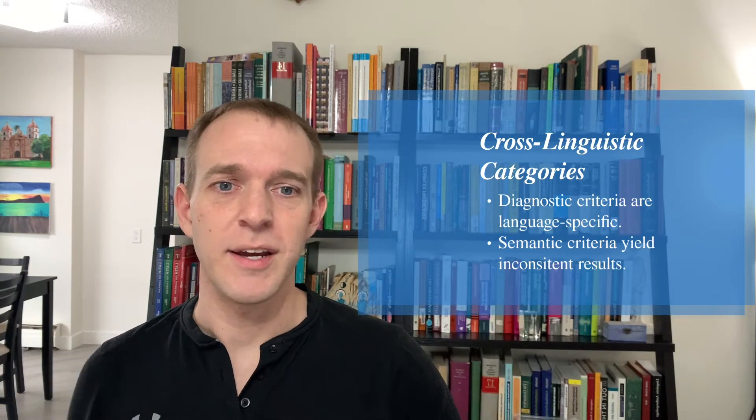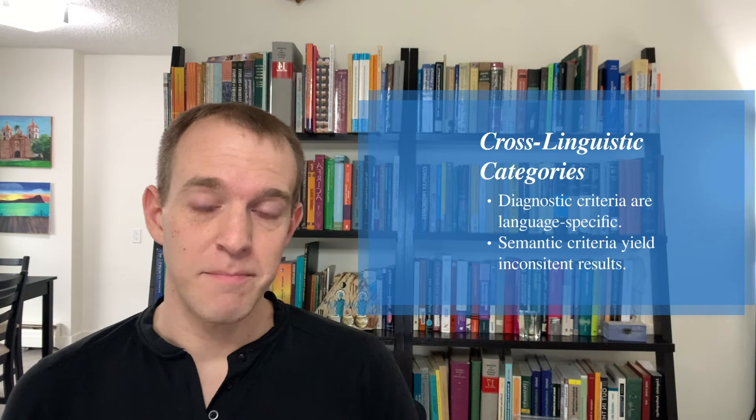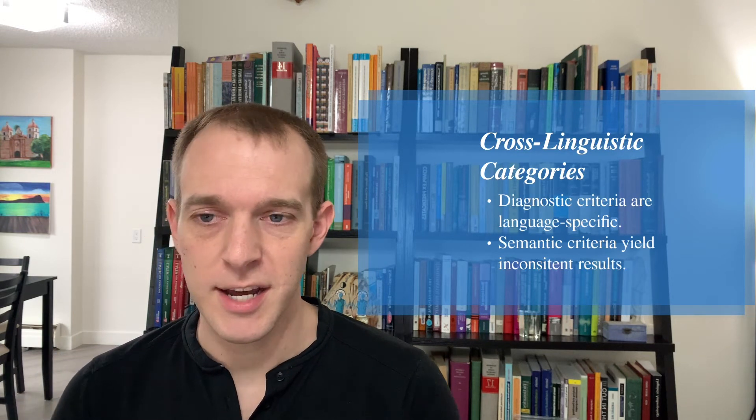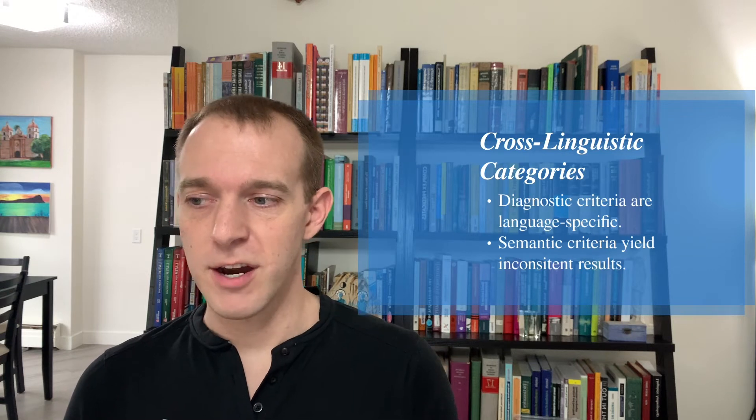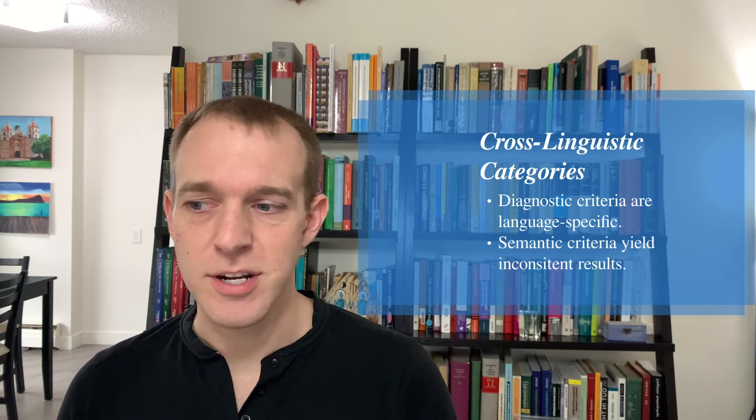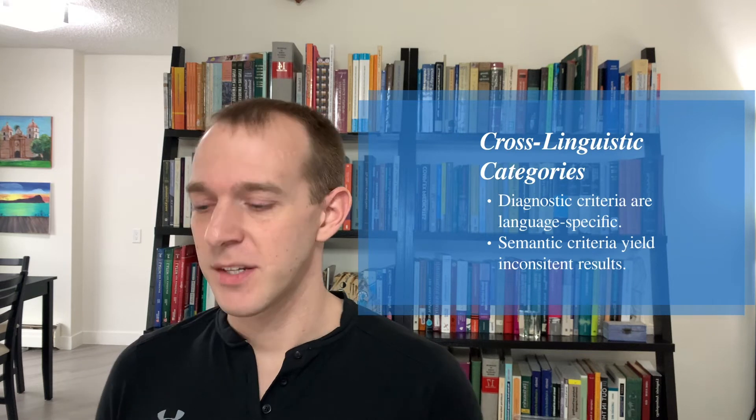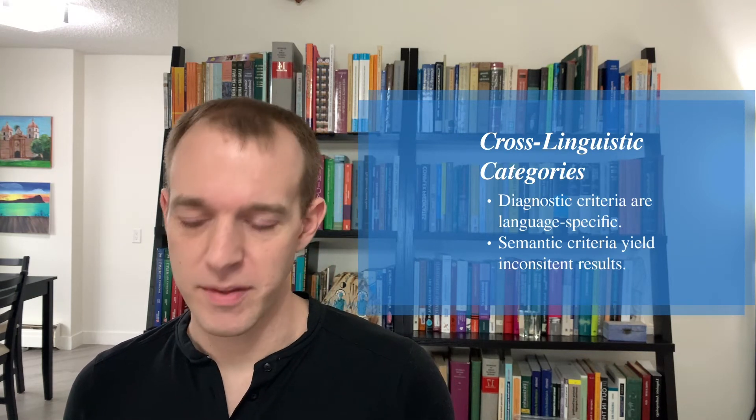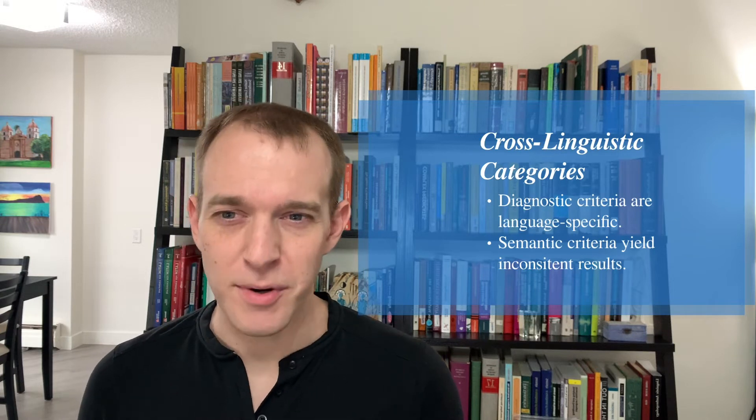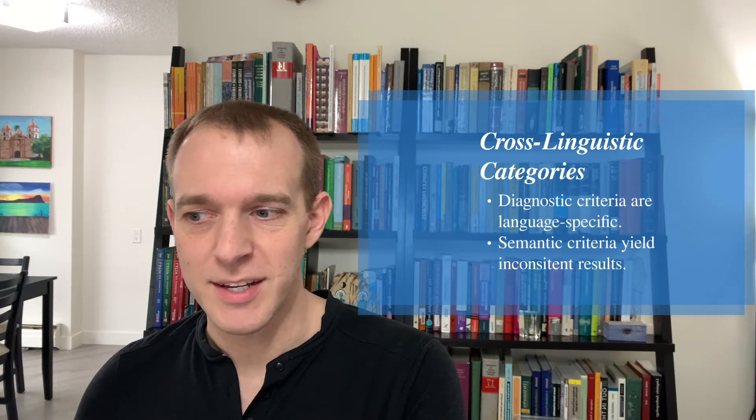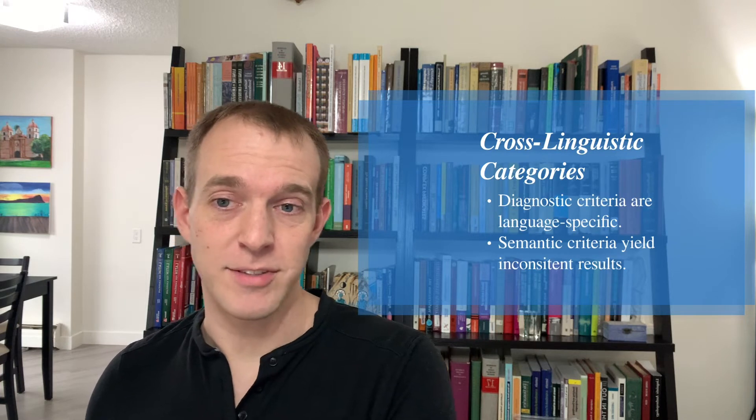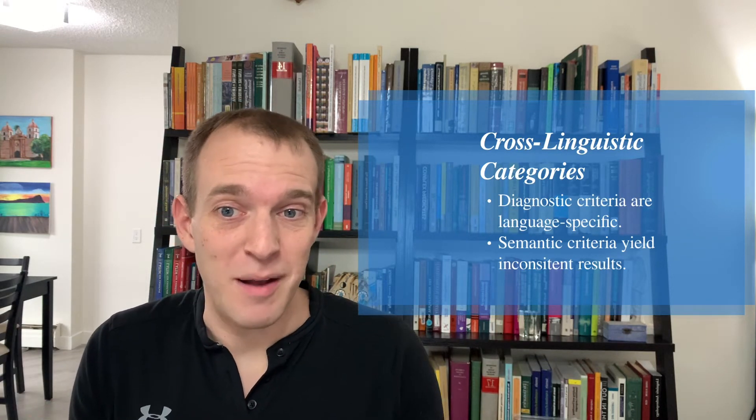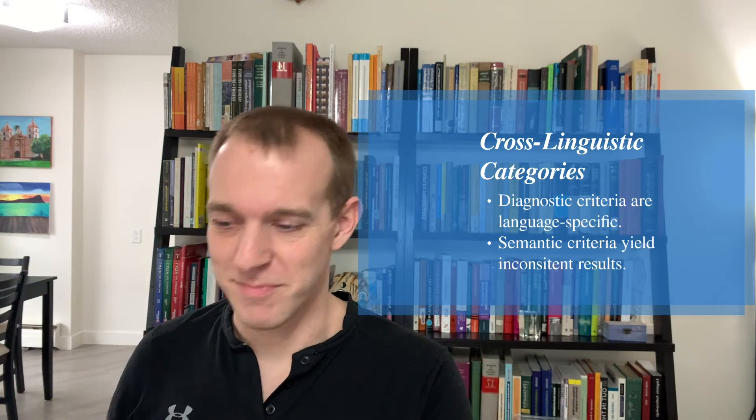It's hard enough to identify them within English, but how can we map these categories of English onto Spanish or Swahili or Latin or whatnot? And this is a real methodological issue for linguists because all of the criteria we use to figure out what counts as a noun in English is language specific. So if I say that a noun is something that can take plural marking, for example,